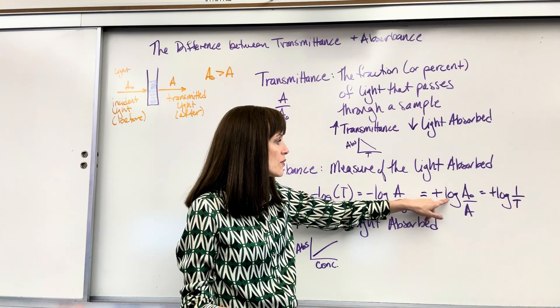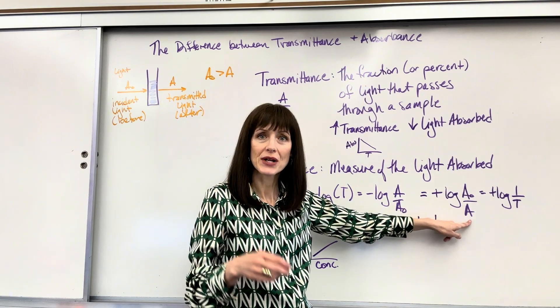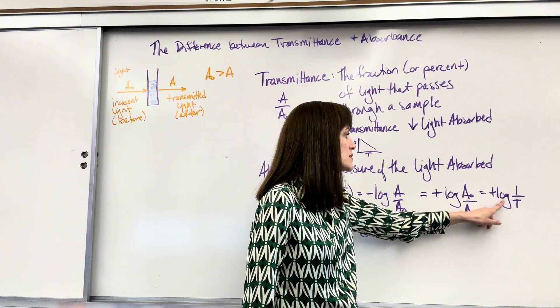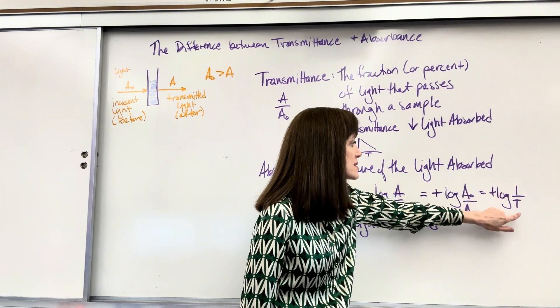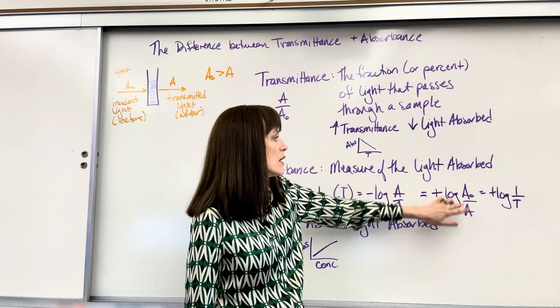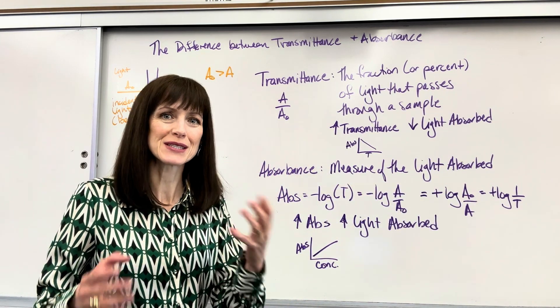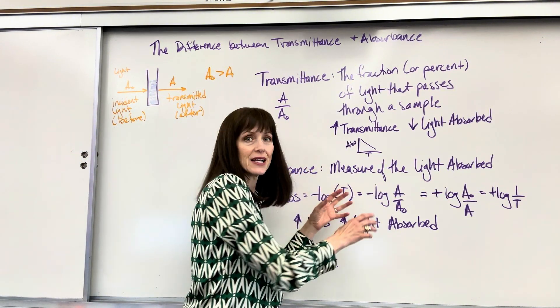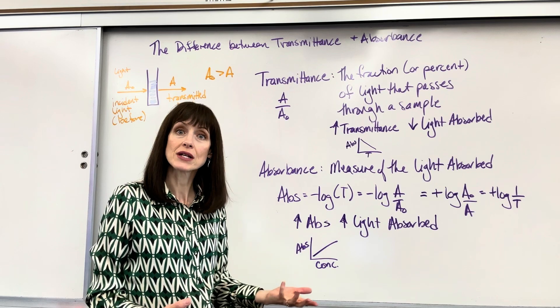The positive log of the incident light, what you begin with, divided by the transmitted light. And often in books, you'll see it as positive log of one over transmittance. When that reciprocates, T is reciprocated, that's when you have the A-knot over the A. It's all the same thing. It's just a mathematical manipulation. So if you see any of those, you'll go, oh yes, absorbance is just the negative log of the transmittance.